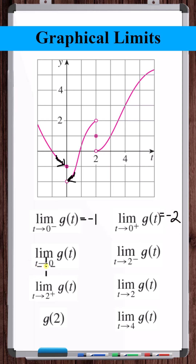The limit as t approaches zero in general — well, coming from the left and the right are two different limits, so this limit does not exist.